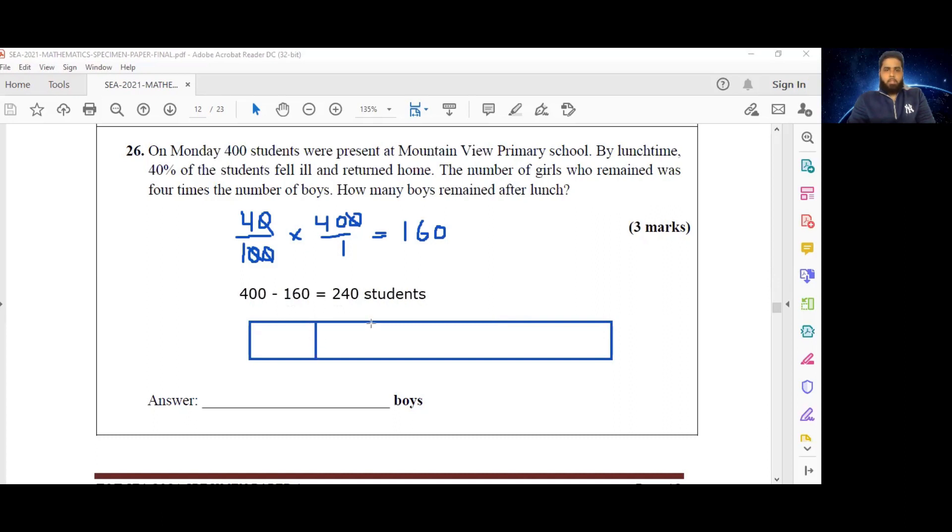The girls outnumber the boys four times to one. So we have four of these being girls and one being boys.